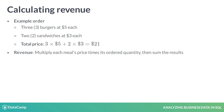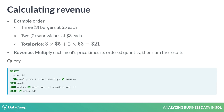This query calculates revenue per order. Join meals to orders on meal ID to get the meal price and quantity in the same query. Group by order ID to get revenue per order. You can also calculate revenue per other metrics, such as user ID and month. The former is useful in determining which users bring in the most revenue, while the latter tracks revenue over time.